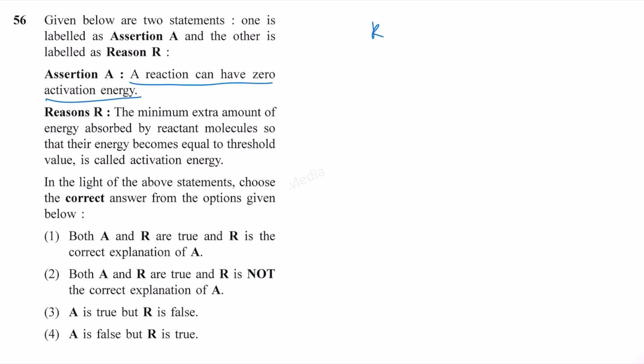From Arrhenius equation, we know that rate constant k is equal to frequency factor times e to the power minus Ea, that is the activation energy, divided by RT. If activation energy is zero, then zero by RT is zero. This means that e to the power zero, and that is equal to one. Therefore, the rate constant will become simply equal to frequency factor.